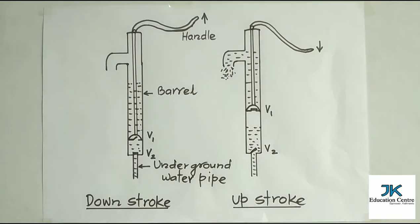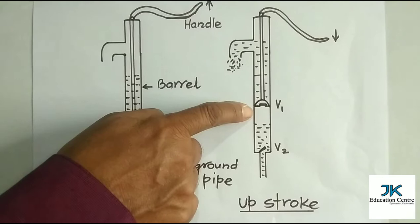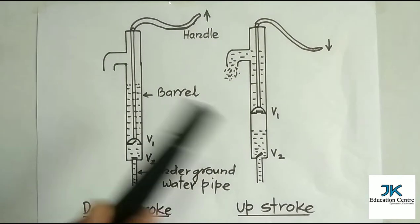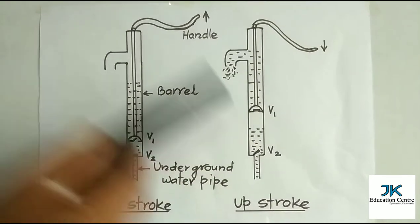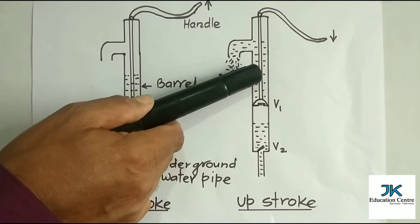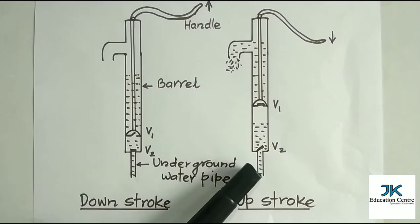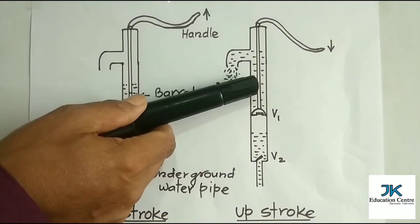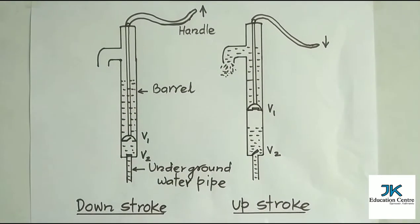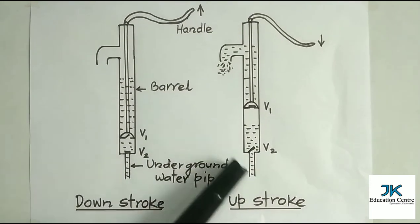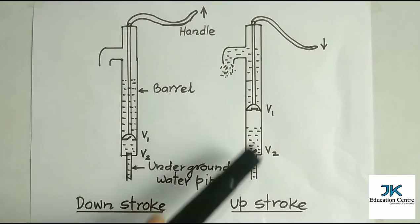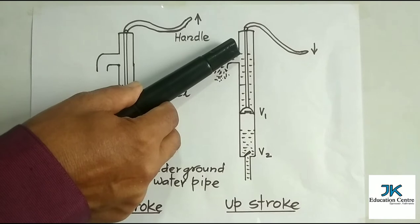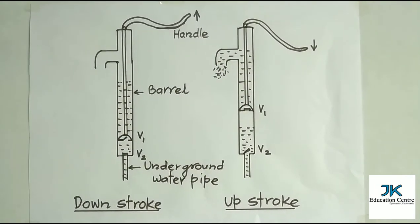In the up stroke, the piston moves upward. The space between the two valves increases, so volume increases and pressure of this region decreases. Water from the upper side cannot enter this space because water pressure closes valve B1. At the same time, the pressure of the underground water opens valve B2 and water enters the space. Meanwhile, the piston moving up pulls the water above valve B1 upward and it comes out through the outlet. This is how the water pump works.